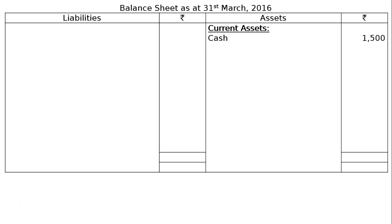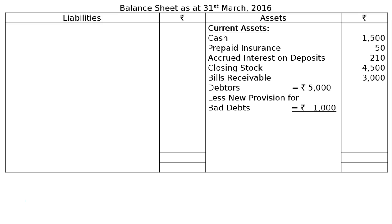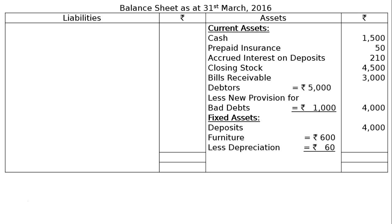On the asset side we will have current assets: cash Rs 1,500; prepaid insurance Rs 50; accrued interest on deposit (interest receivable) Rs 210; closing stock Rs 4,500; bills receivable Rs 3,000; debtors Rs 5,000 less new provision as per adjustment Rs 1,000, giving Rs 4,000 in the final column. Under fixed assets: deposits Rs 4,000; furniture Rs 600 less 10% depreciation Rs 60, giving Rs 540 in the final column. The total asset side of the balance sheet comes to Rs 17,800.